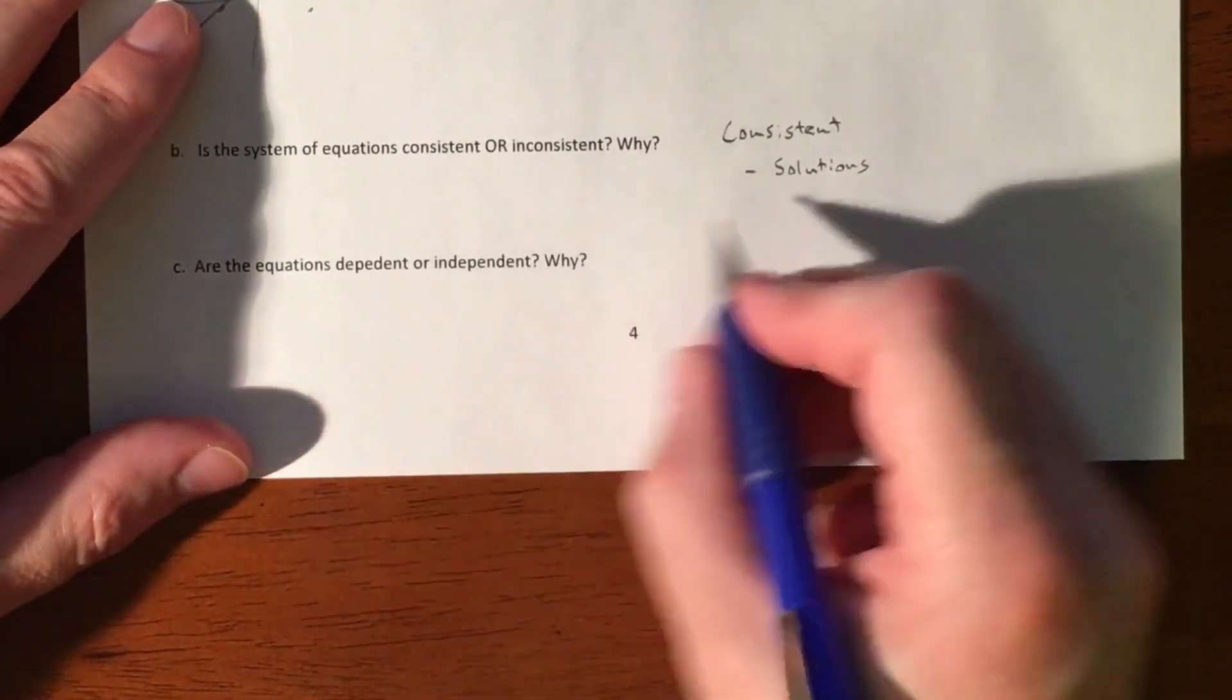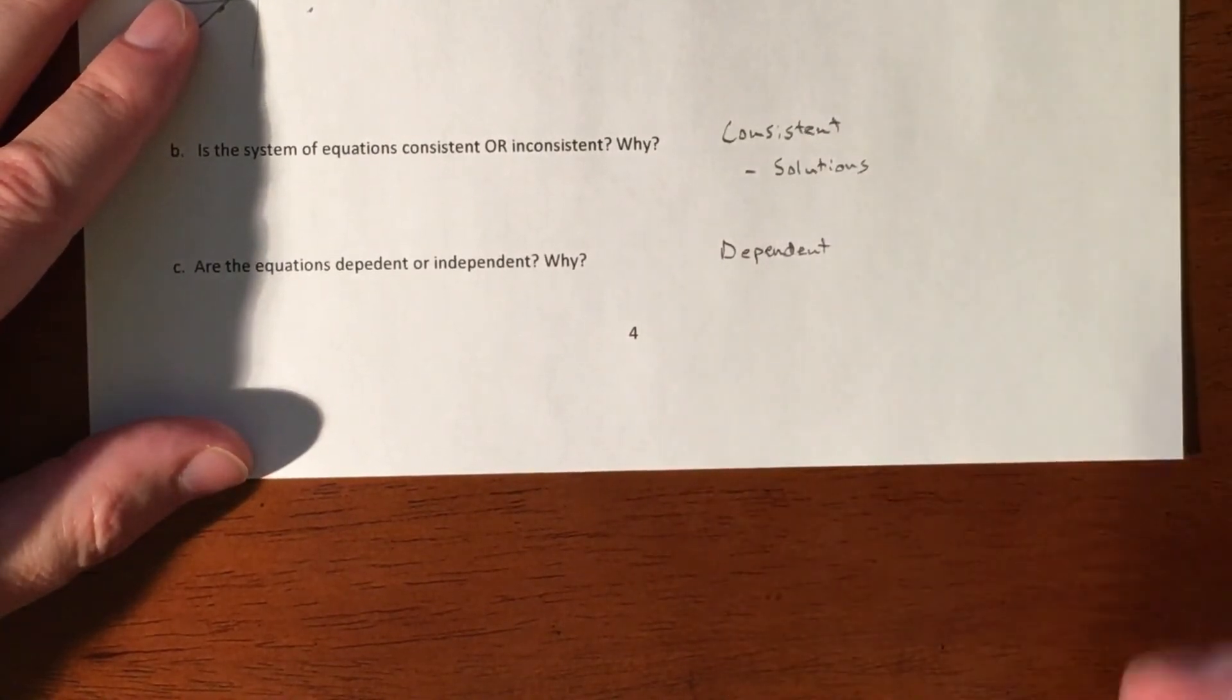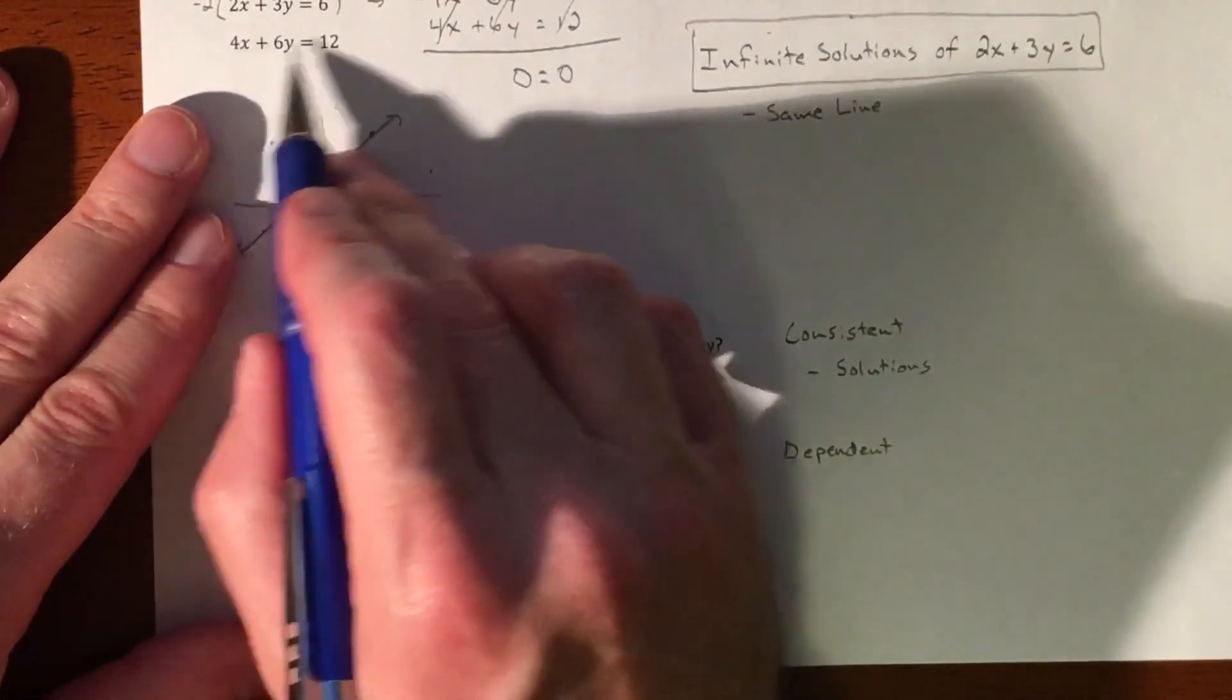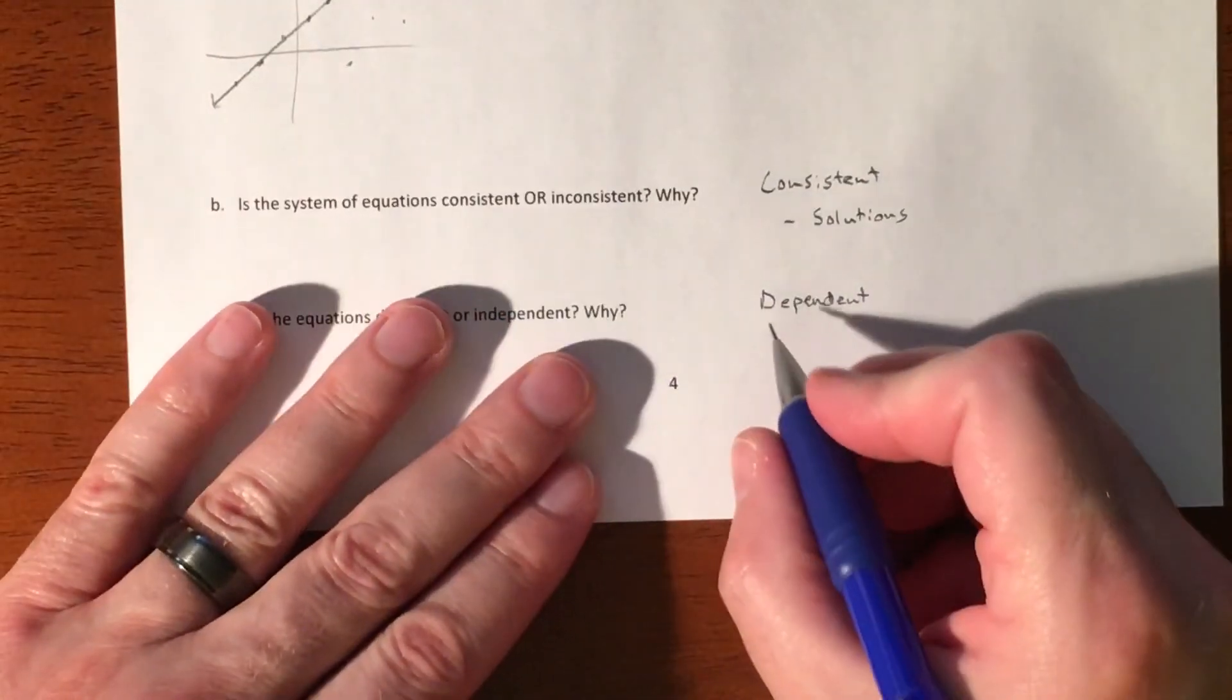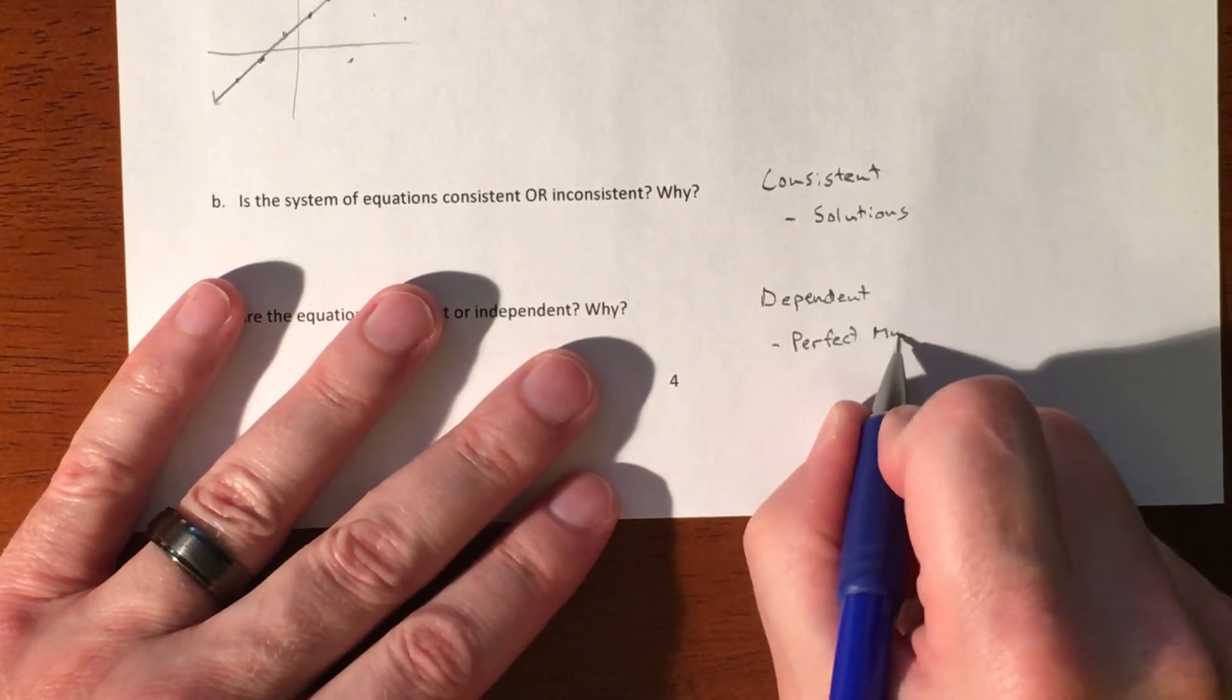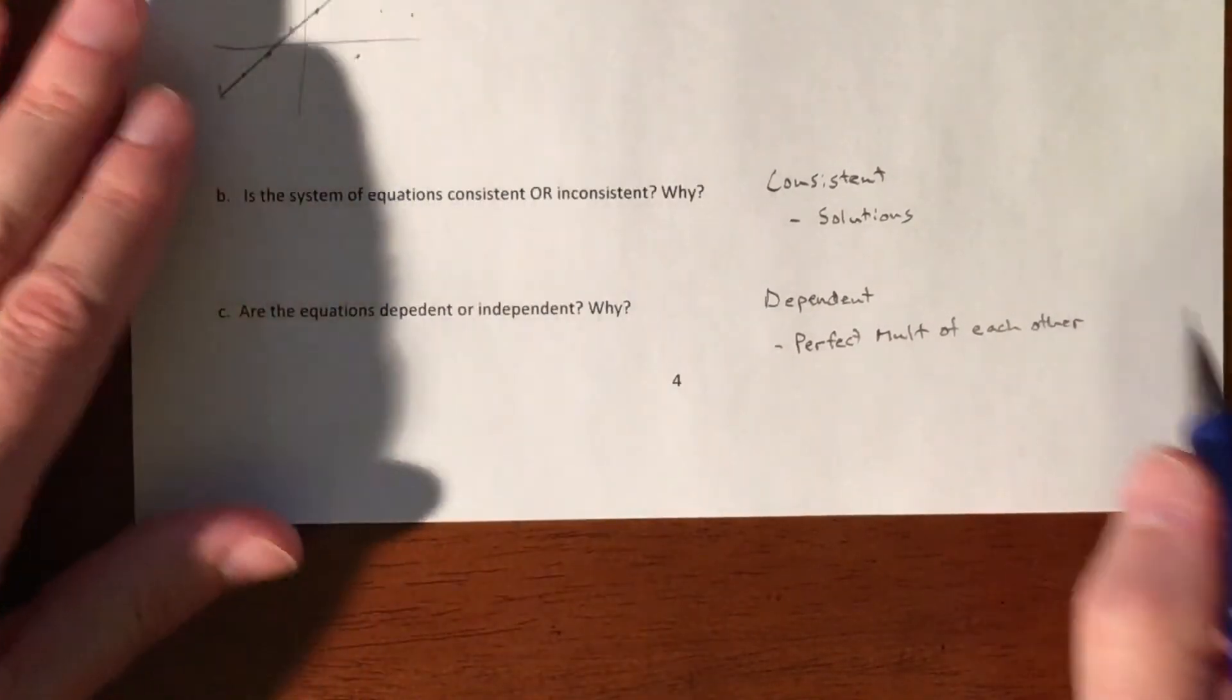And then it is dependent. Why are they dependent? Because one of the equations is a perfect multiple of the other one. If you doubled that, you get this one. So they're perfect multiples of each other, that's why everything cancels. And so the equations are perfect multiples of each other, and that's what makes them dependent.